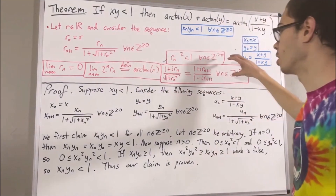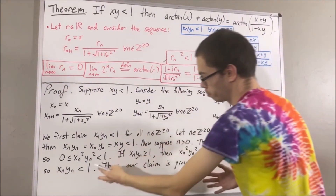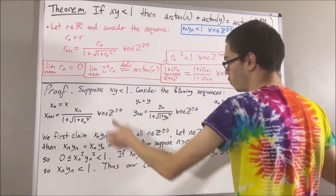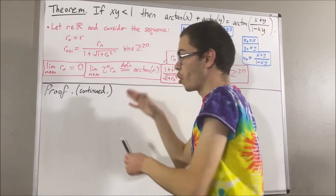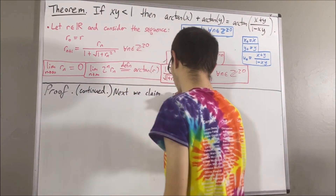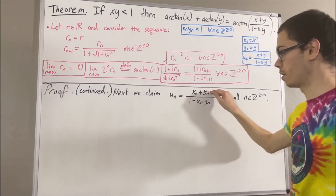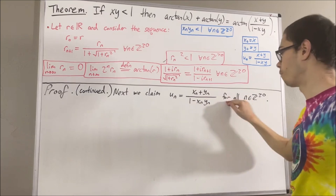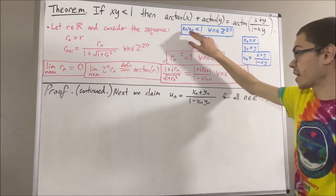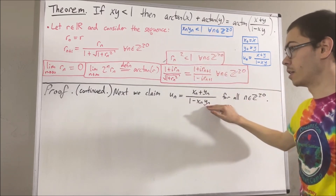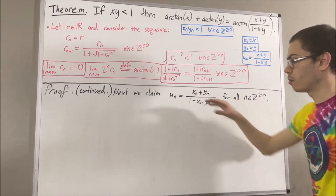The notes written in red are general notes about this sequence, and the notes in blue pertain specifically to this proof. Now the real claim is the following: we claim that un is equal to xn plus yn all over 1 minus xn times yn for all n. This assertion makes sense because we know for all n that xn yn is less than 1, therefore 1 minus xn yn is greater than 0, so we can divide by 1 minus xn yn. So now let's prove it.